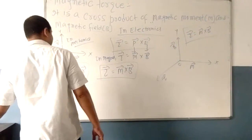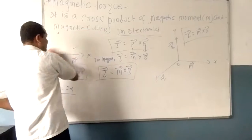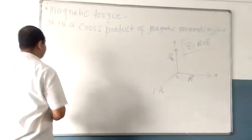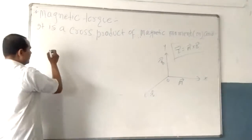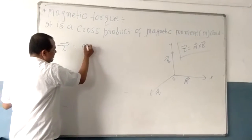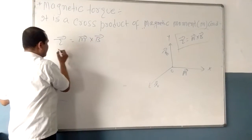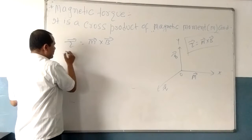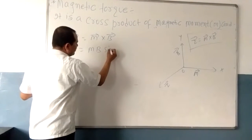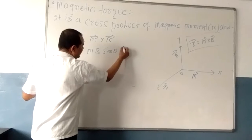Now I am releasing this topic and going to derive it again. We have studied the formula: magnetic torque is equal to M cross B, which is magnetic dipole moment into magnetic field. So torque is equal to M·B·sinθ·n̂.